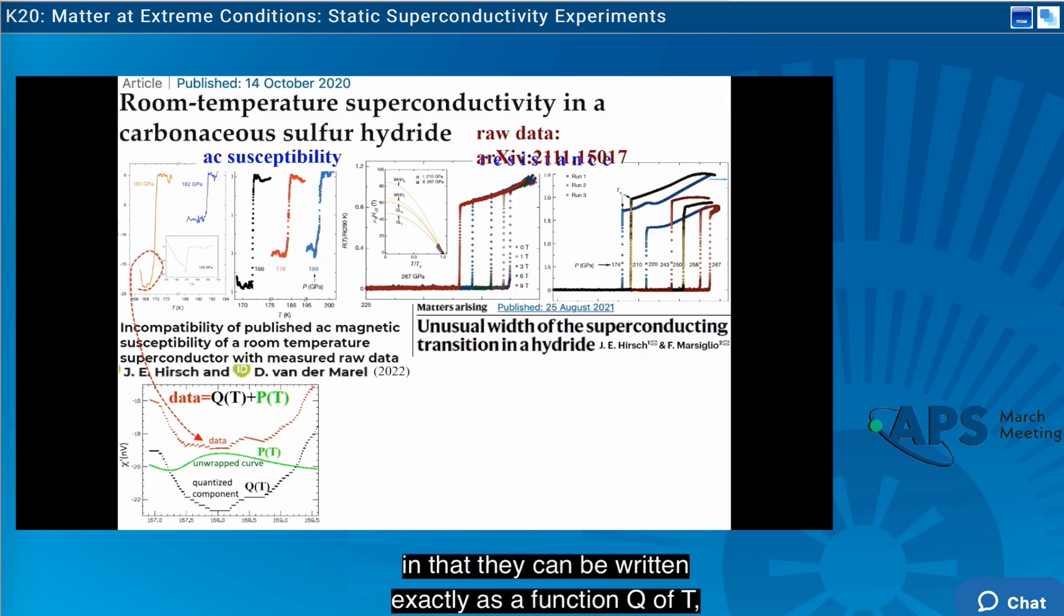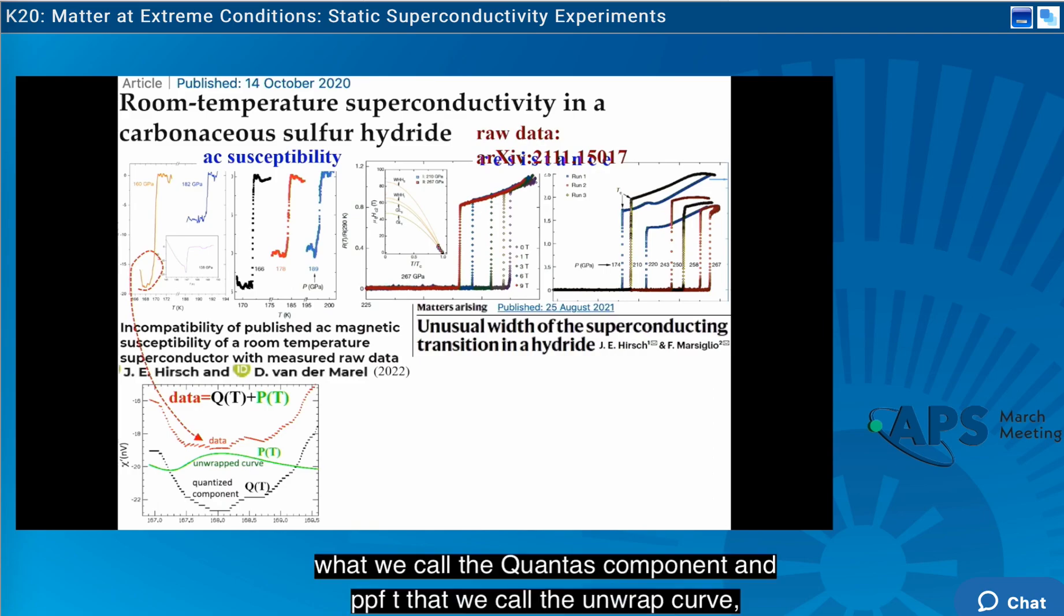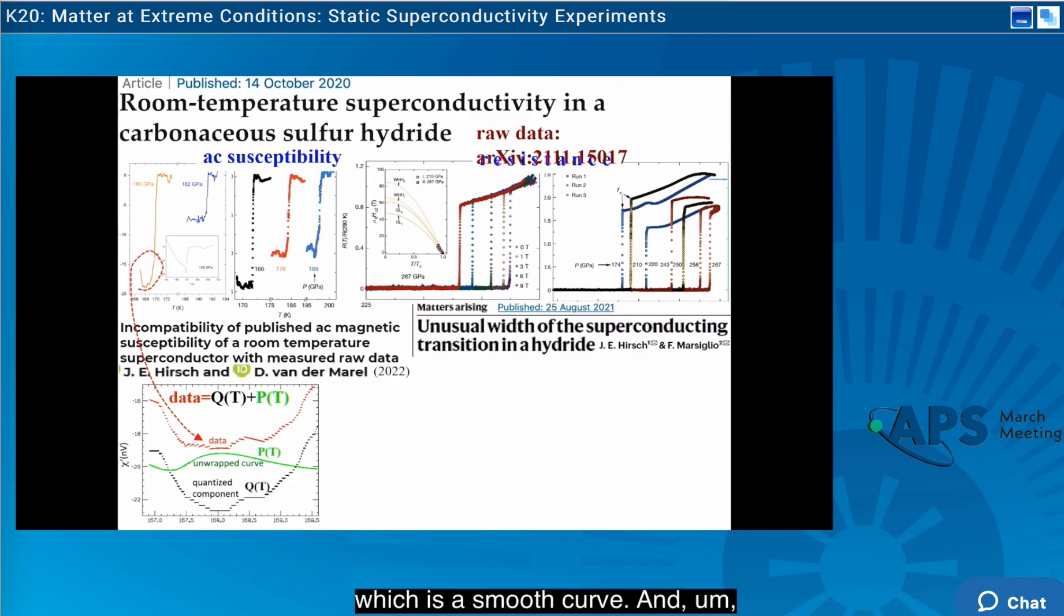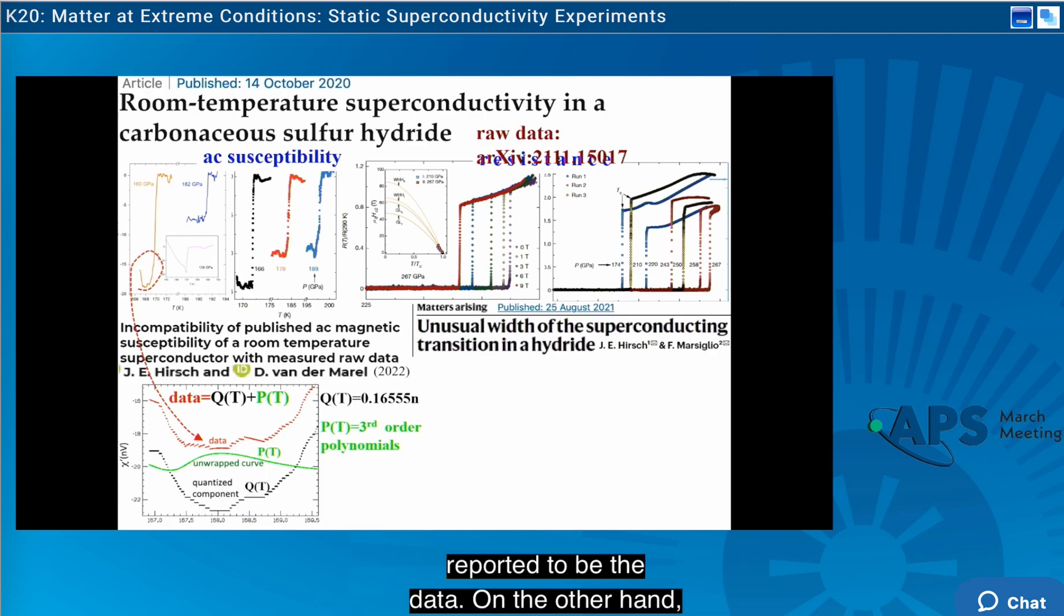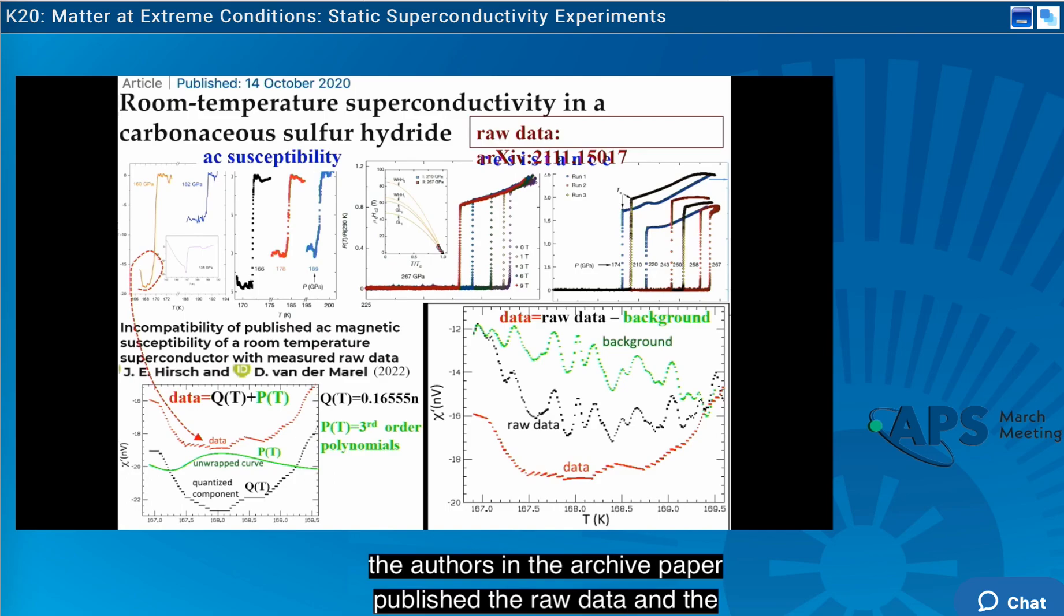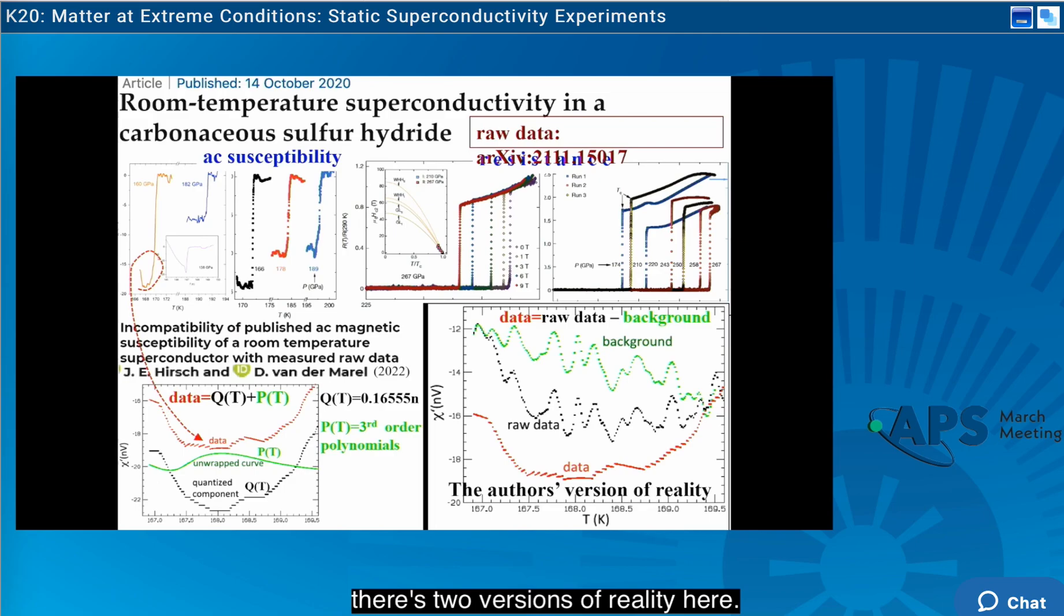what we found is that the data has this peculiar step shape, and that they can be written exactly as a function Q of T, which we call the quantized component, and P of T that we call the unwrapped curve, which is a smooth curve. We have analytic formulas for these two functions from which we get what is reported to be the data. On the other hand, the authors in the arXiv paper published the raw data, and the background can be inferred by subtraction. And as you see, they look very different from what we have here, but the data, of course, the same. So there's two versions of reality here.